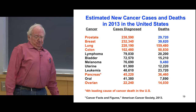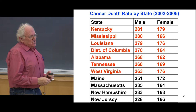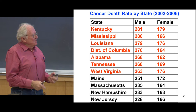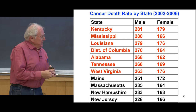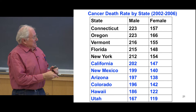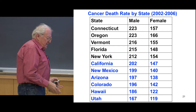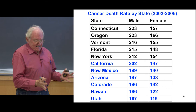Looking at cancer death rate by state: southeastern states, with a lot of smoking, air pollution, and heavy alcohol use — mainly smoking — have very high cancer death rates in males and females. Much lower in the northeast, and out west very, very low. Good lifestyle out here. And of course in Utah — no smoking, very low death rates because of the Mormons.